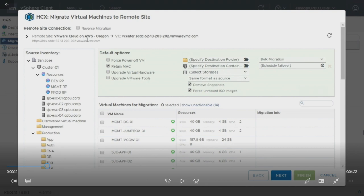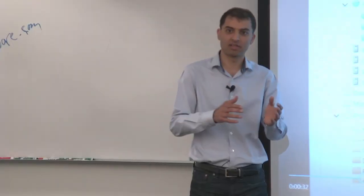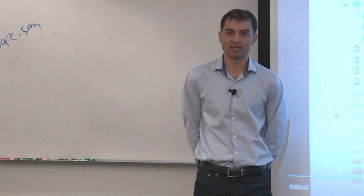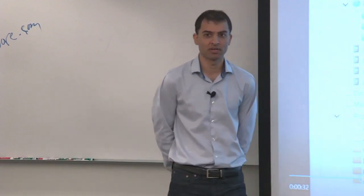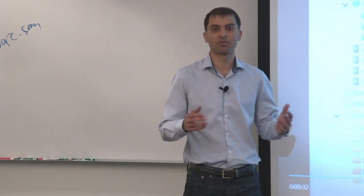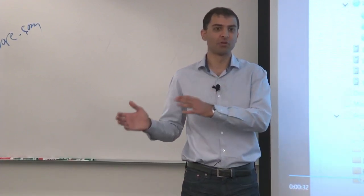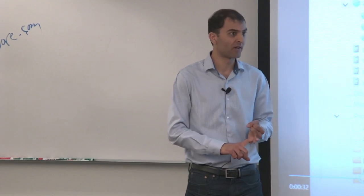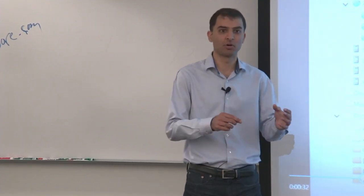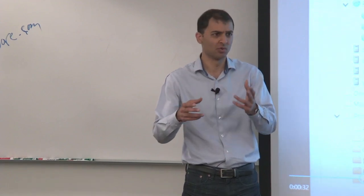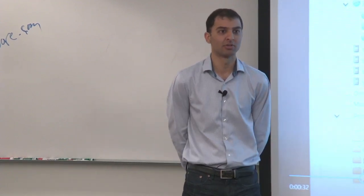Then we select the type of workload mobility option: HCX with vSphere replication, bulk migration, cold migration, or live migration. You can also go from thick to thin storage or vice versa — right-sizing inline is supported. There's also the ability to re-IP or run a script inside your VM — either pre-migration or post-migration — if you need to update some data in flight during the move.